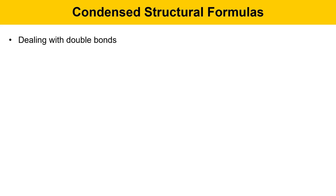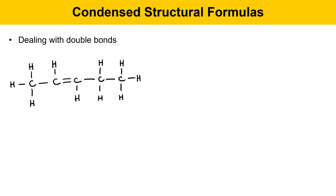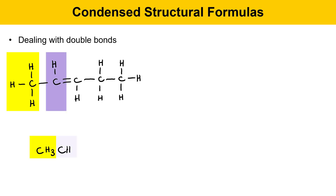This slide talks about how to handle double bonds in condensed structural formulas. Here's an example of an alkene — a molecule that contains a carbon-carbon double bond. Oftentimes with carbon-carbon double bonds, people will draw in the C=C double bond as a pair of lines between a couple of carbons. We'll start on the left with the CH3 group, then follow up with a CH. Then we'll draw a pair of lines and another CH, and that pair of lines indicates the location of the carbon-carbon double bond. We'll just finish up with CH2CH3.